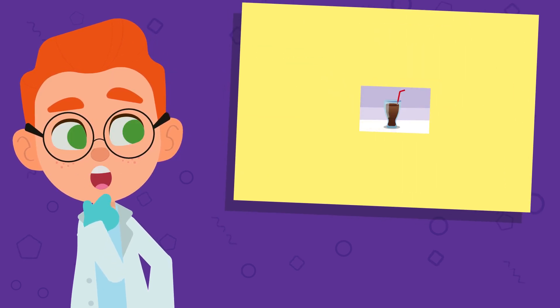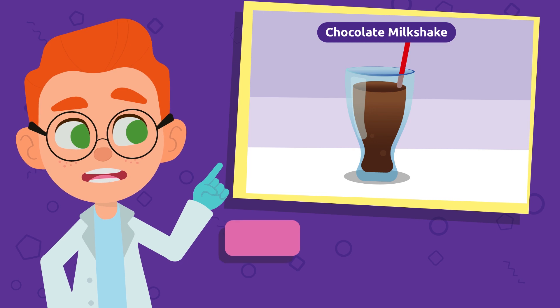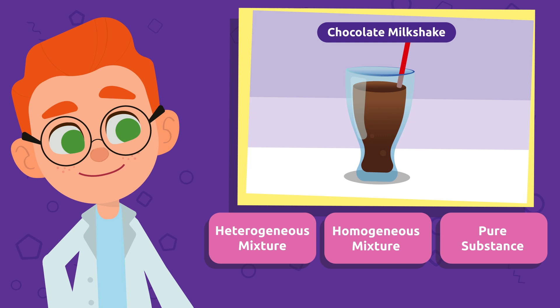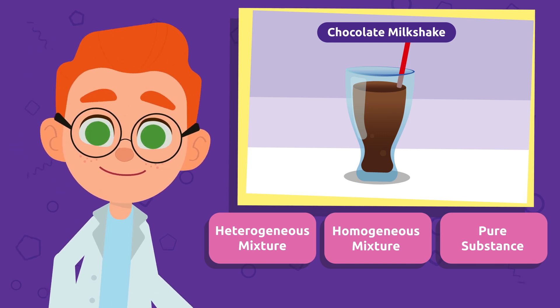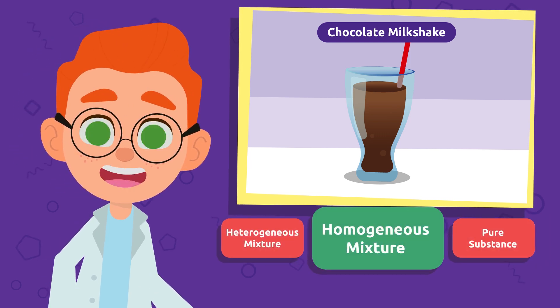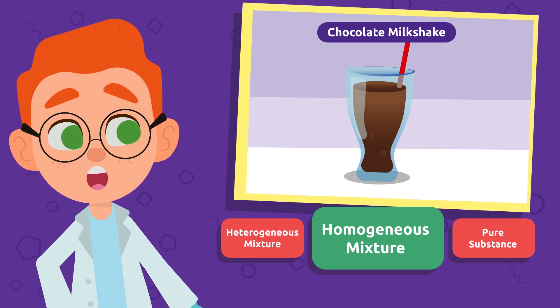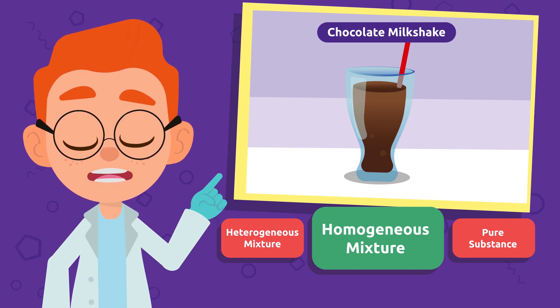What do we have here? Wow! Chocolate milkshake! What kind of substance or mixture is it? This chocolate milkshake is a homogeneous mixture because its components can't be seen with the naked eye.